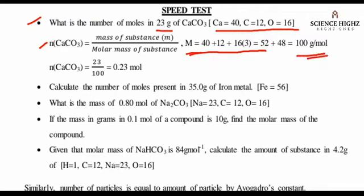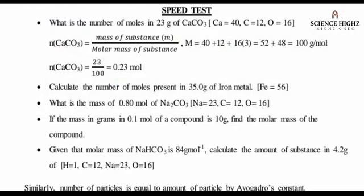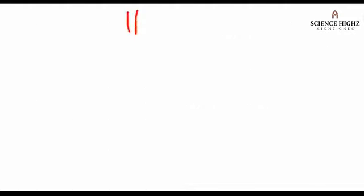So that's for the molar mass. Now we put it into our formula. Amount of substance n is equal to 23 grams all over 100 grams per mole. The grams will cancel each other, leaving only the mole. So we get 0.23 mole.